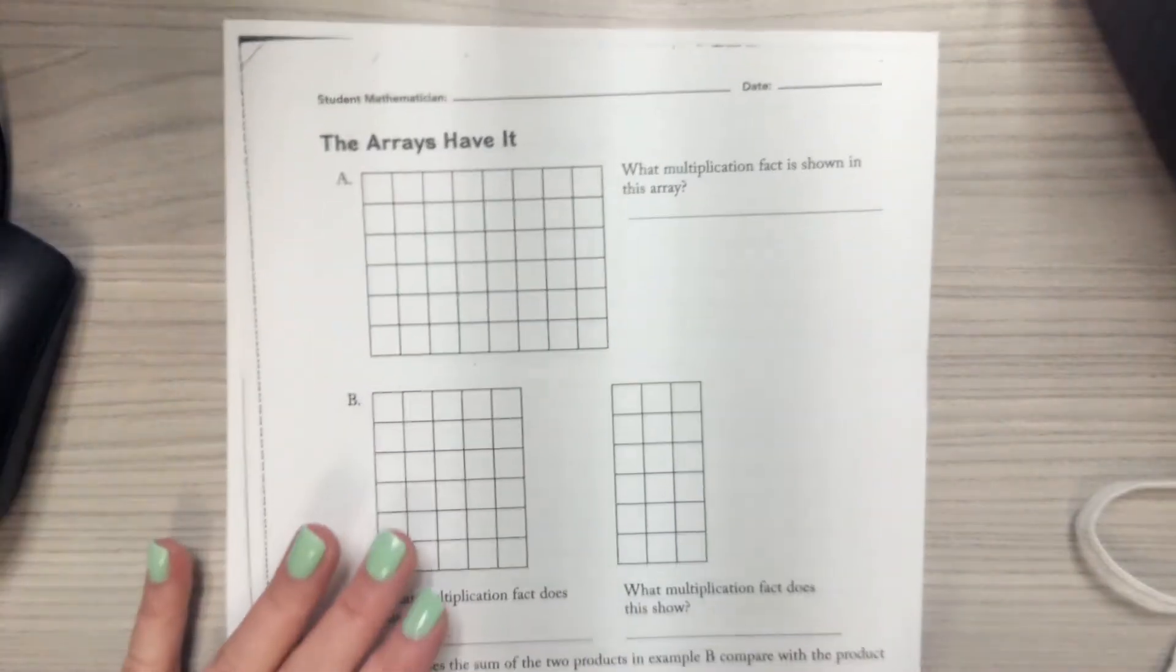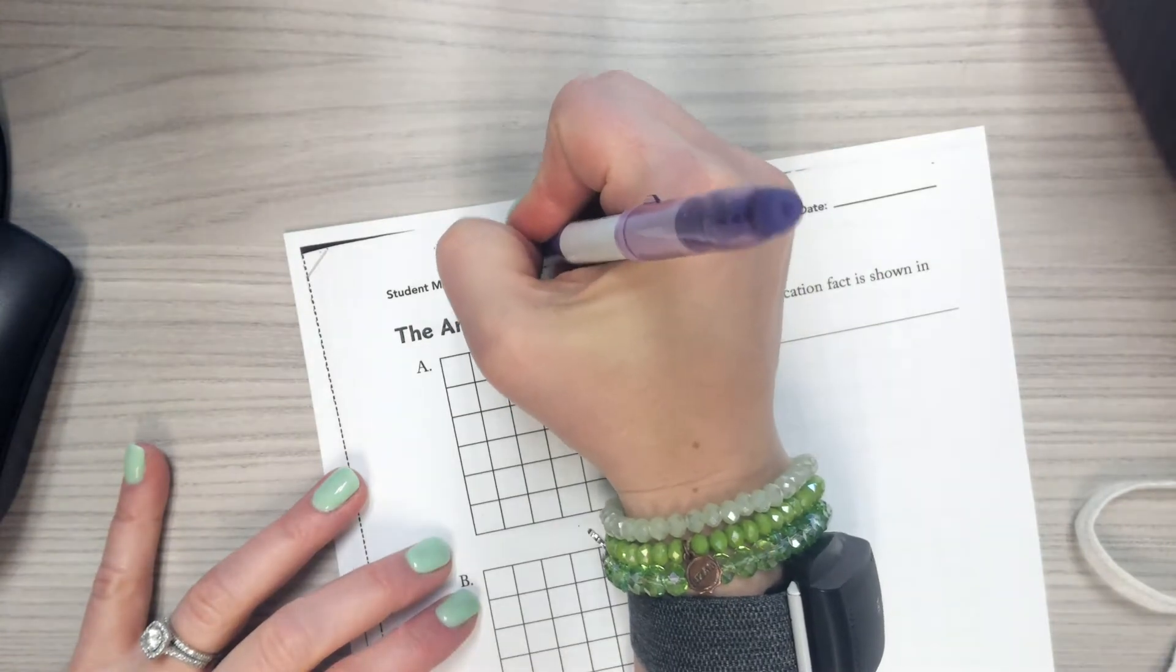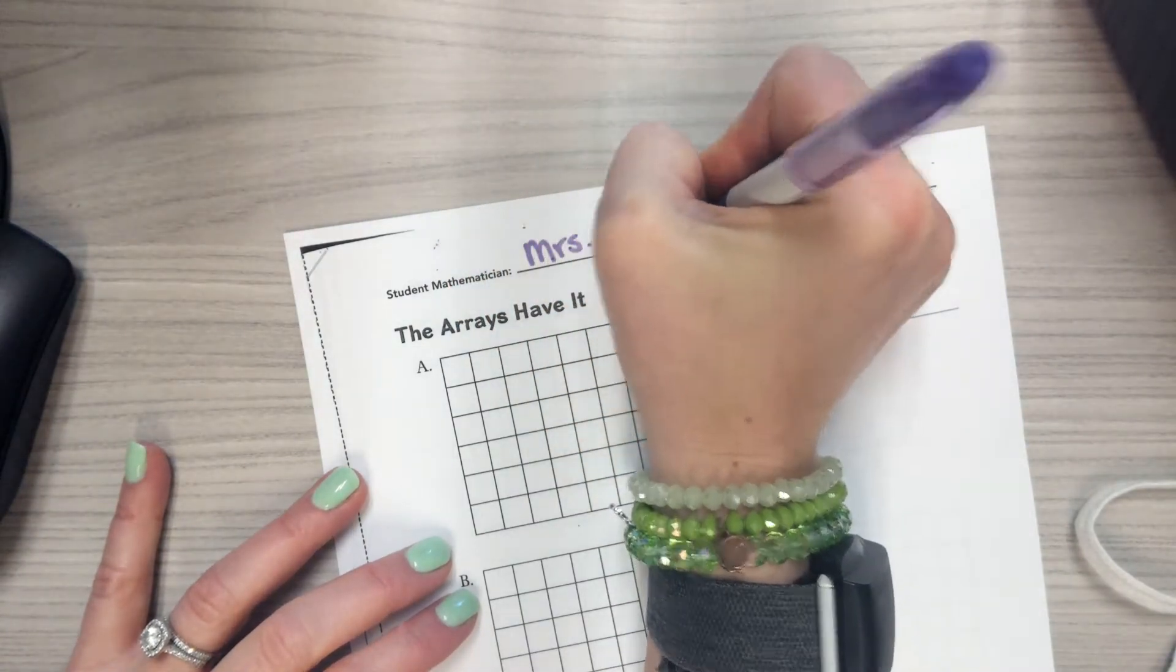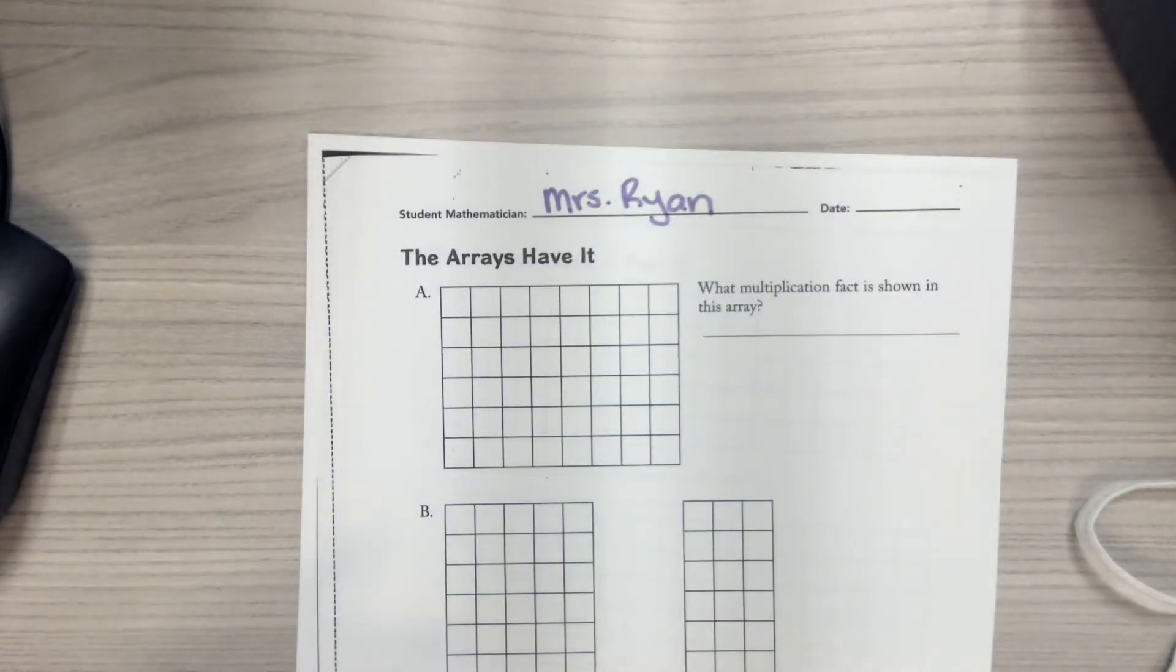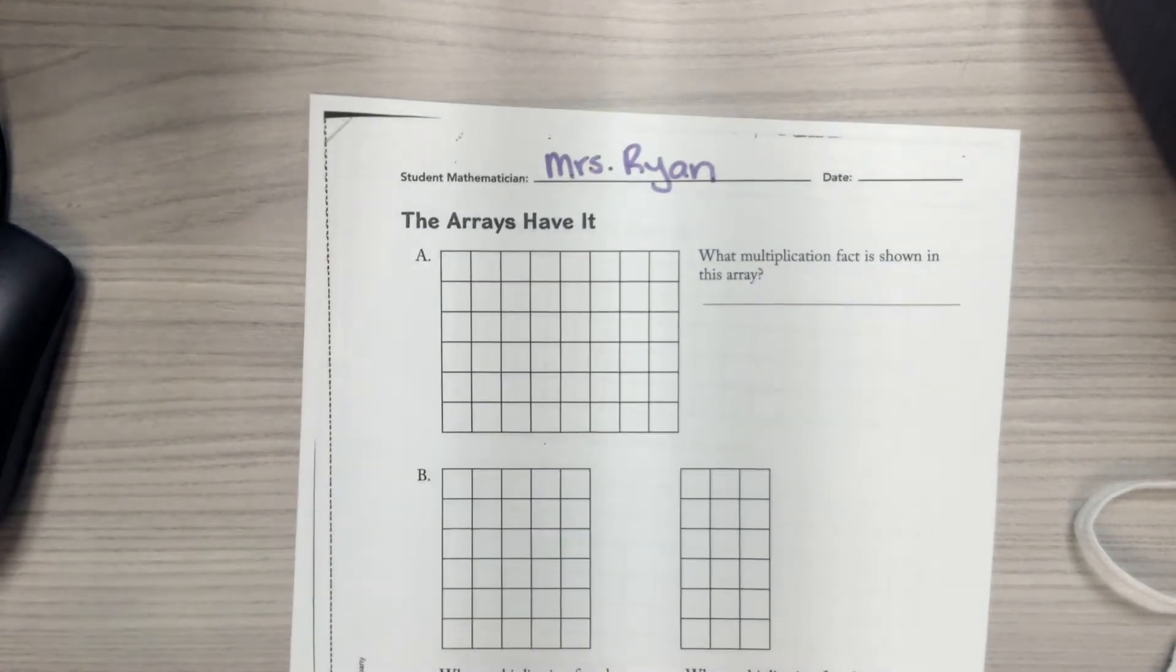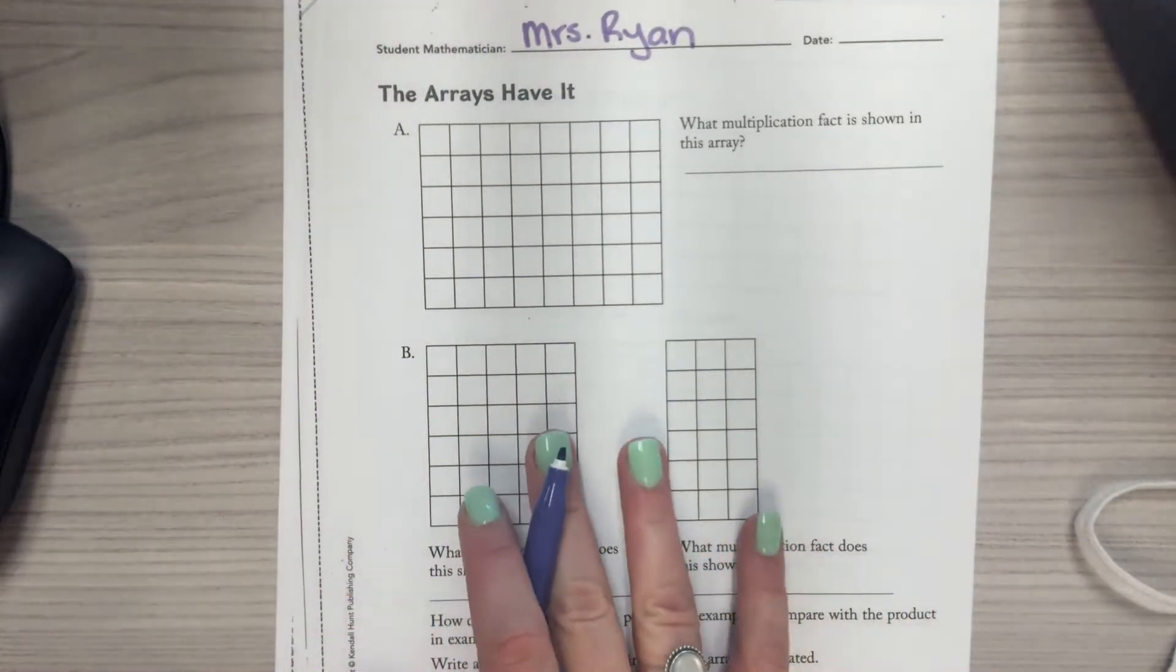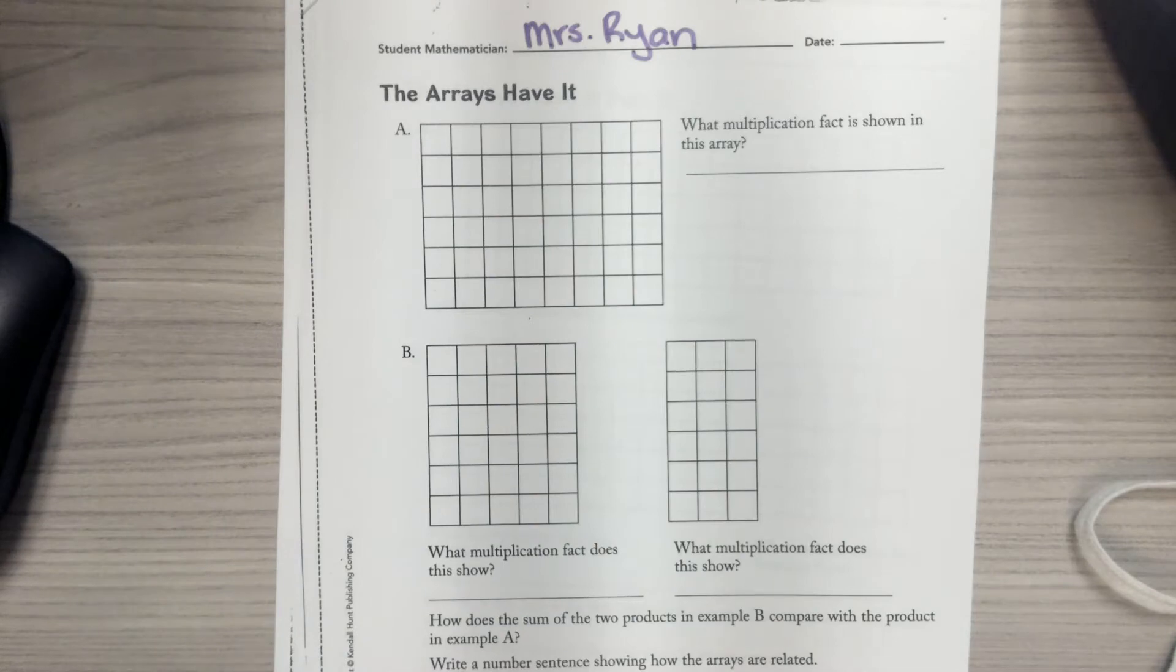I'm going to go ahead and flip the camera around. I'm going to put my name on my paper. So Arrays Habit. Since we have already been talking about arrays this quarter, we're going to look a little ahead about a few steps that are going to help us become math magicians.